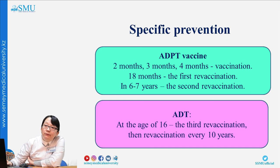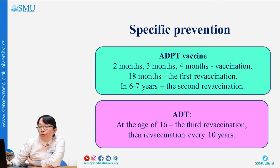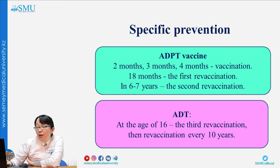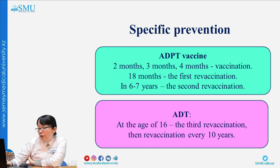The main question is prevention of diphtheria. Specific prevention is the DTP vaccine (diphtheria, pertussis, tetanus). Vaccination schedule: at 2, 3, and 4 months — primary vaccinations; at 18 months — first revaccination DTP; at 6–7 years — second revaccination DTP; at 16 years — third revaccination with DT (without pertussis component). After that, revaccination every 10 years (26, 36, etc.).